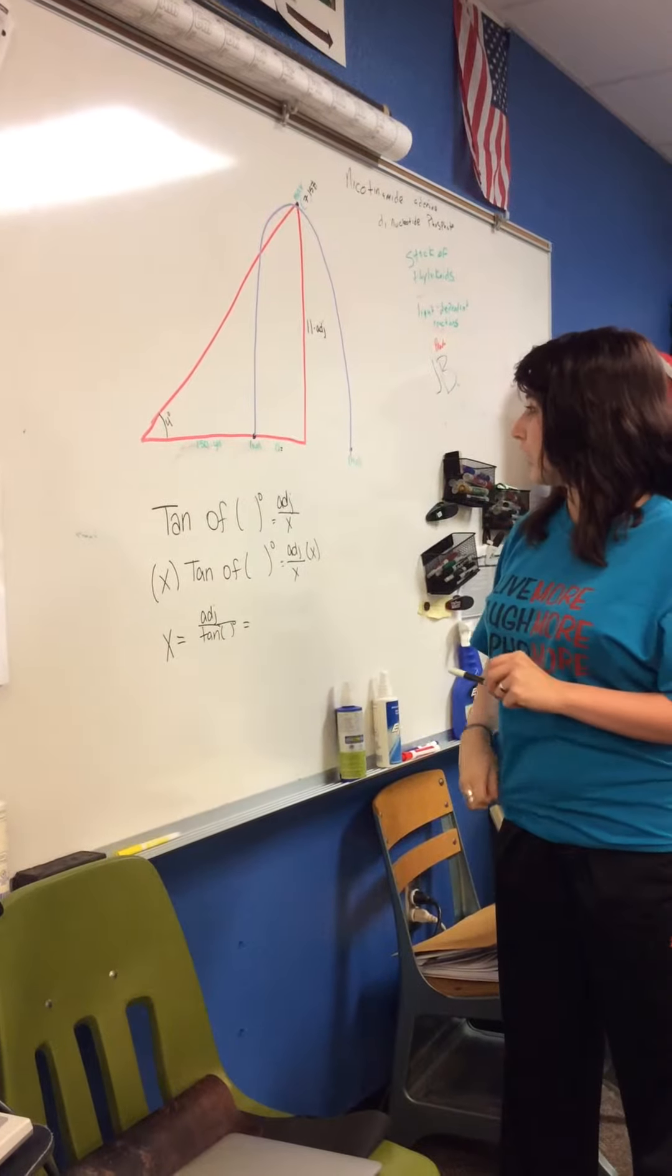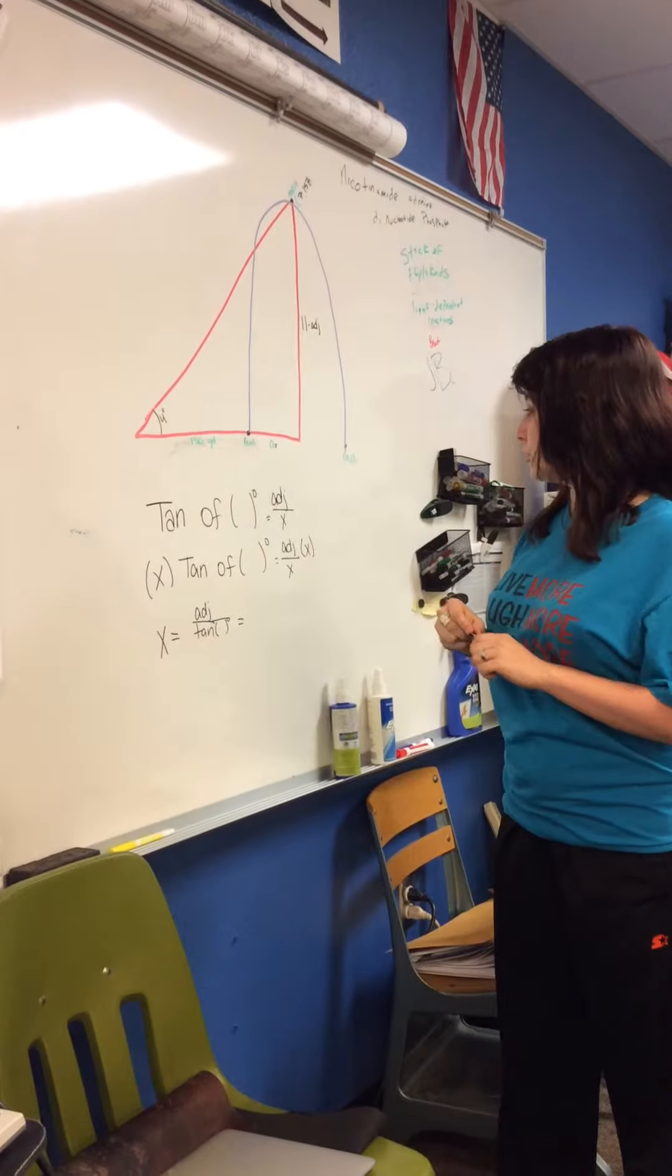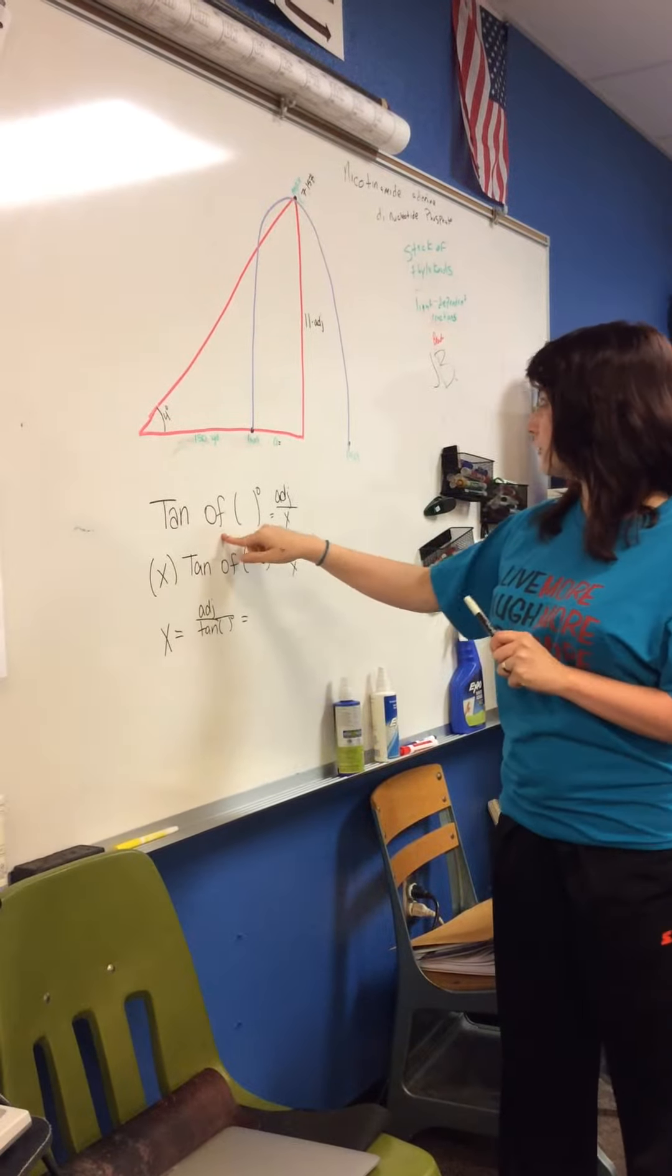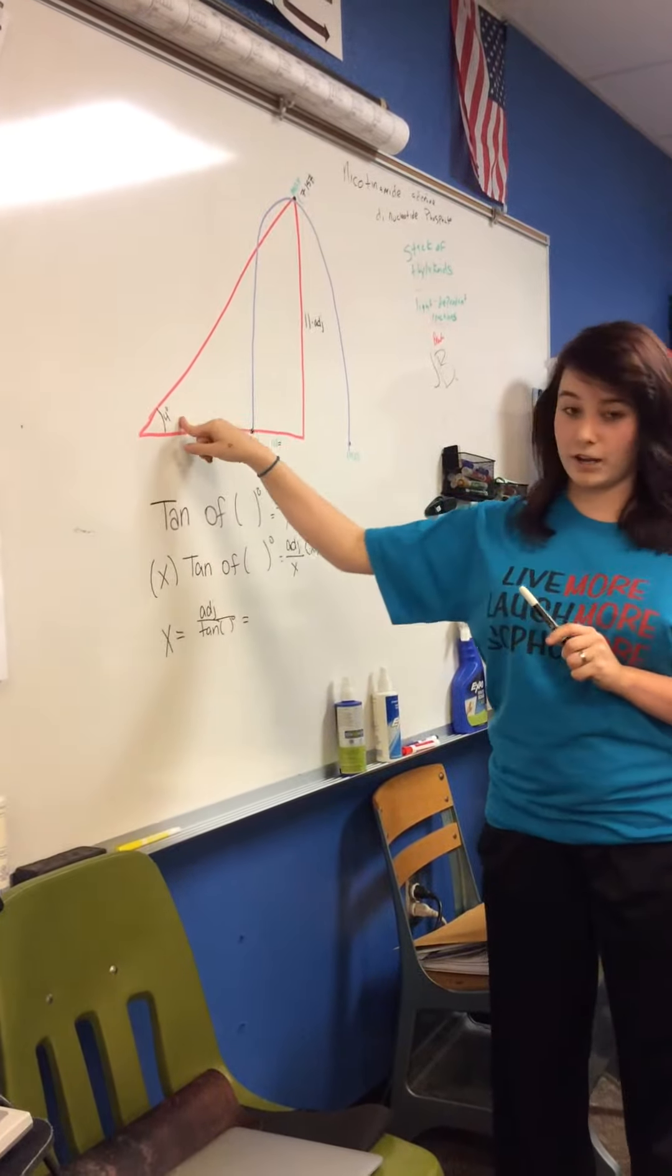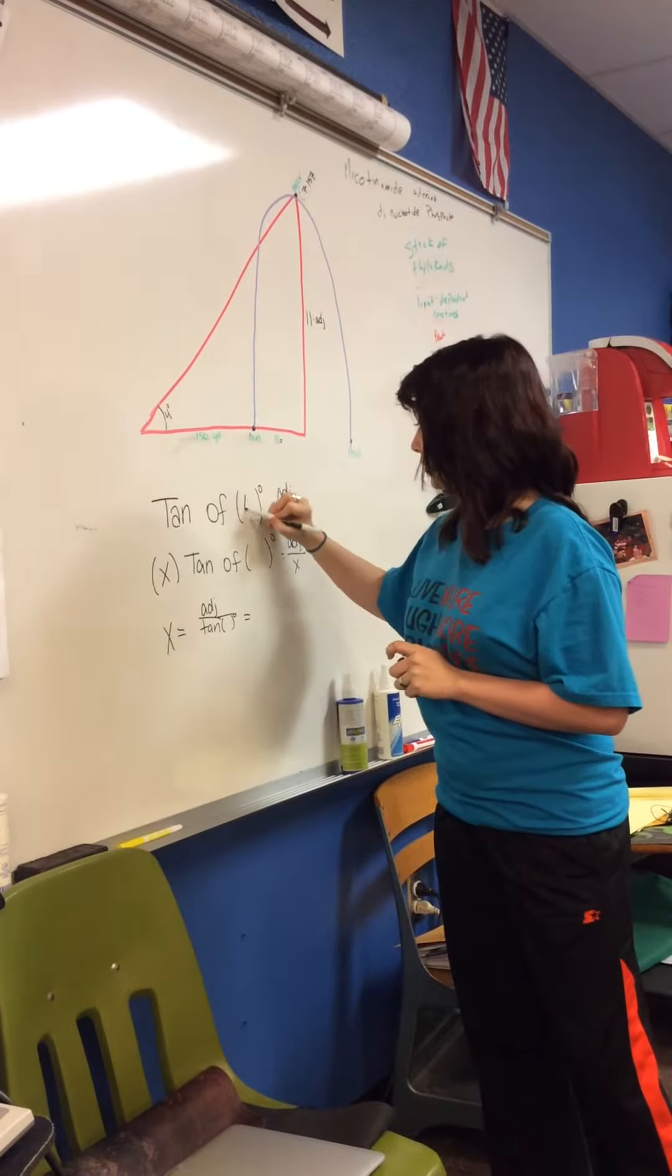In order to find your maximum point, you are going to find the tangent of your degree. Our angle degree is 4, so we're going to put 4 degrees right here.